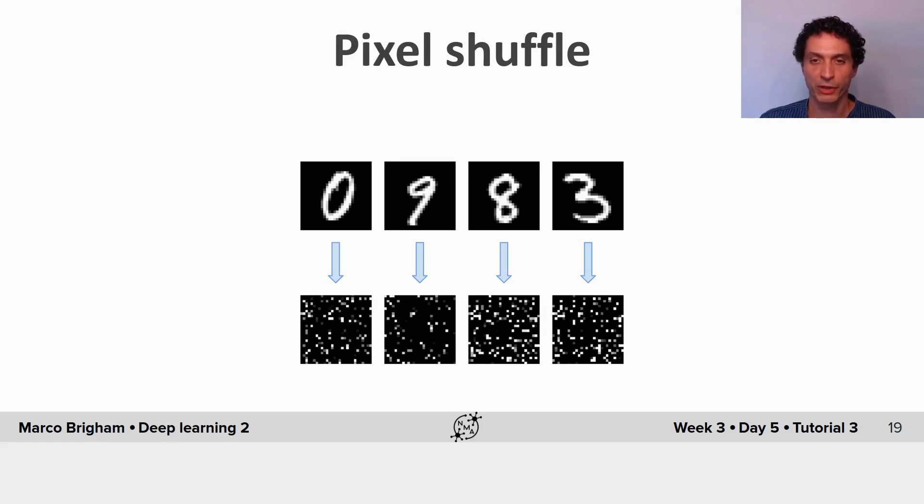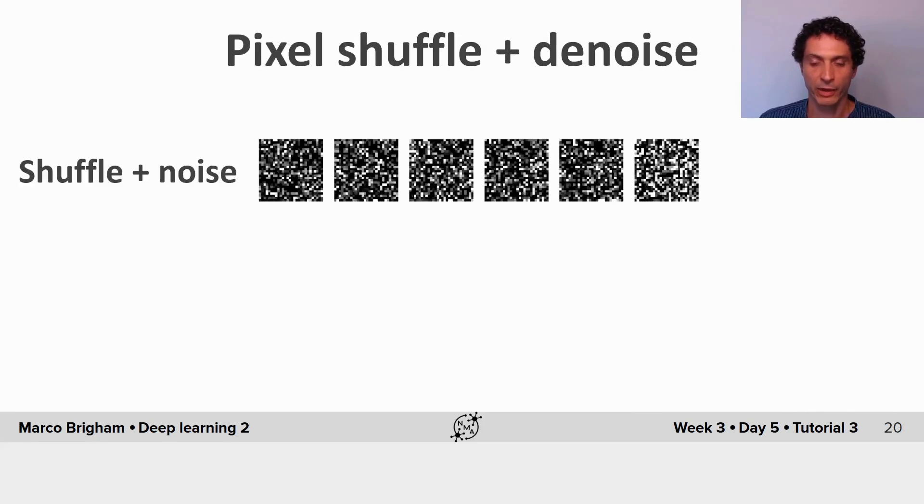So to prove this point, we shuffle all pixels from the MNIST dataset in the same way. So we take one random shuffle and we apply it to all digits. So this is the result of one random shuffle. So you can see that it's really not very recognizable after shuffling. And we do the same thing to the autoencoder. So we take images, we add noise, we shuffle, and we present it to the autoencoder.